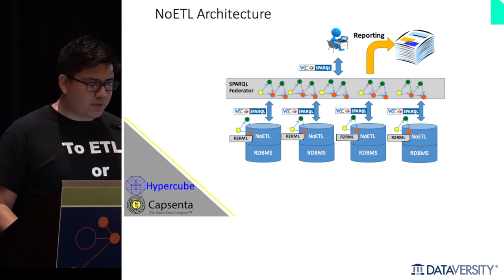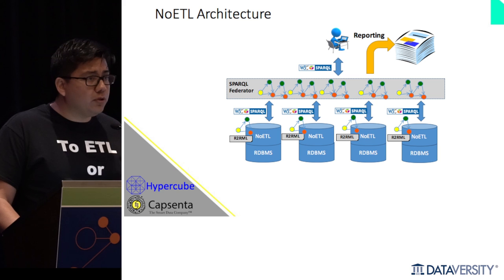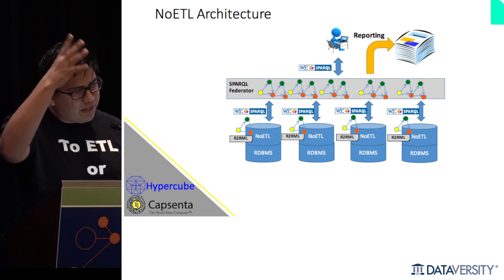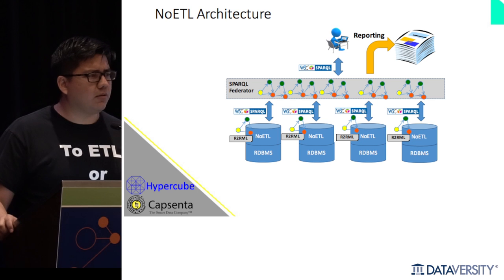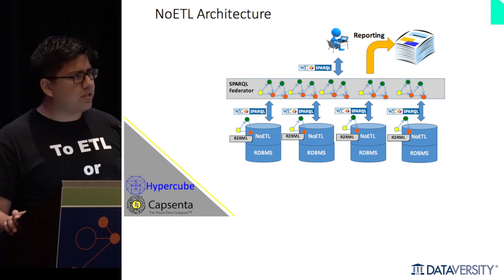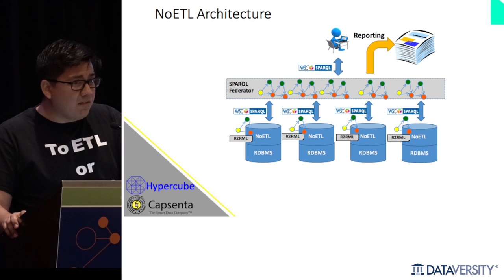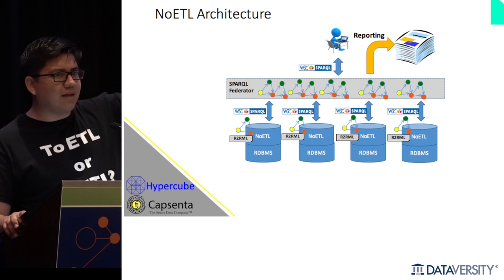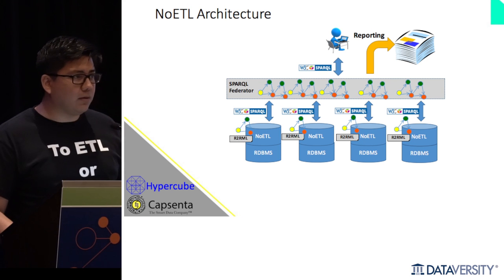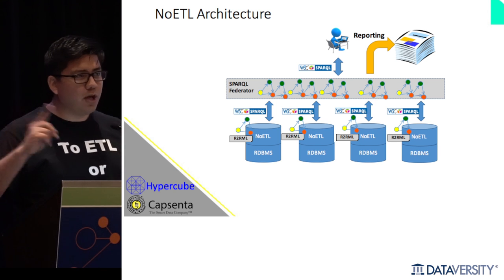Once you create the mappings, the result is the physical mapping in R2RML. This is what that looks like, which is horrible, and I don't want you to learn that — that's why we create tools to automatically do these mappings. Because we're using these techniques, we can generate mappings automatically and the user just has to verify that things are correct. The mappings are represented in R2RML, which is itself RDF and fully declarative — everything is expressed in terms of that target EKG, for example FIBO.